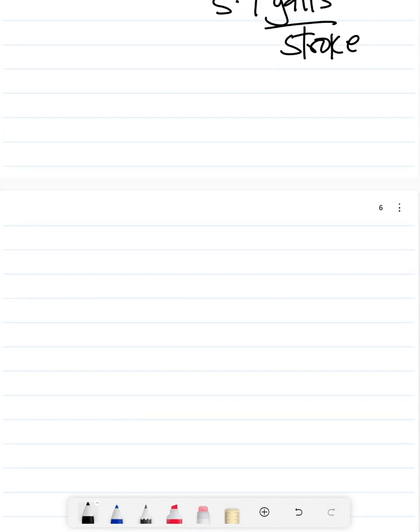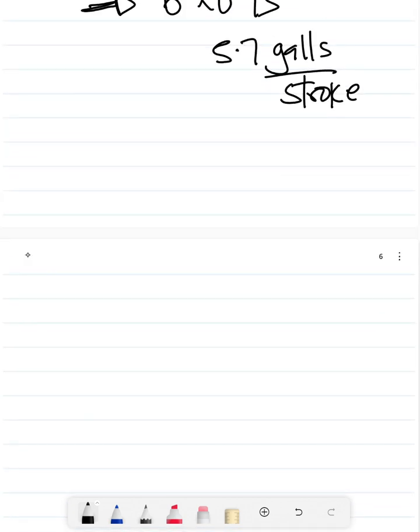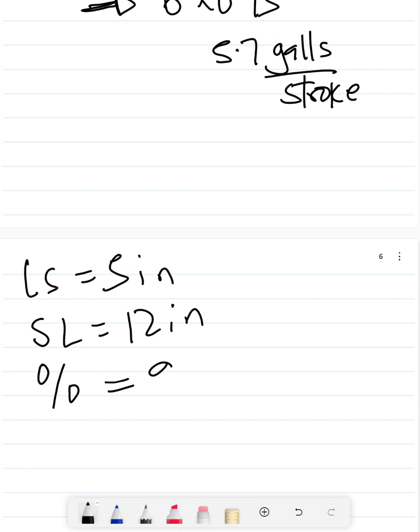I'd like us to try a quick calculation. Say, for example, your liner size is 5 inches, stroke length is 12 inches, and your efficiency is 98%. Let's do the numbers and see what we have. Post your answer in the comments. Thank you for listening, bye for now.